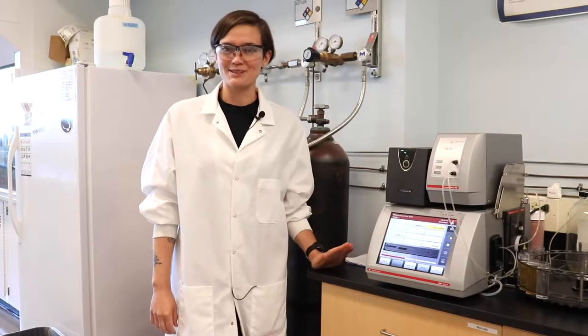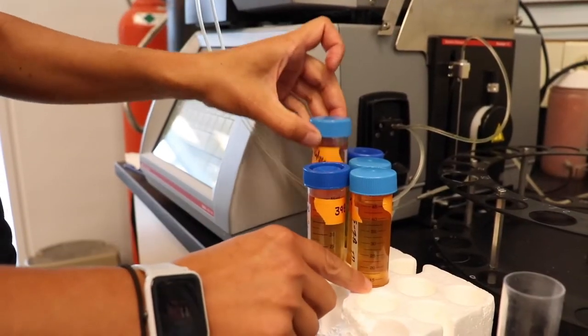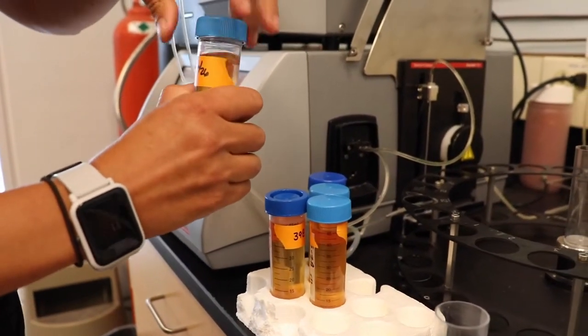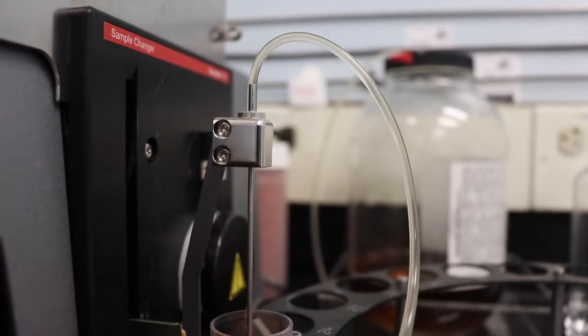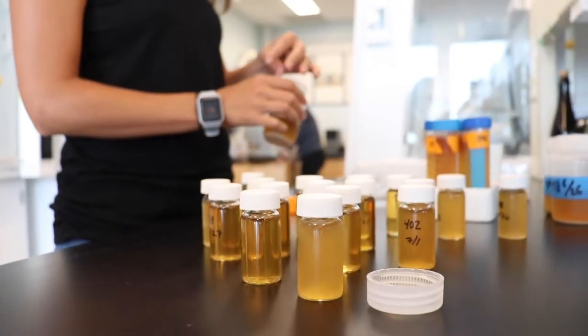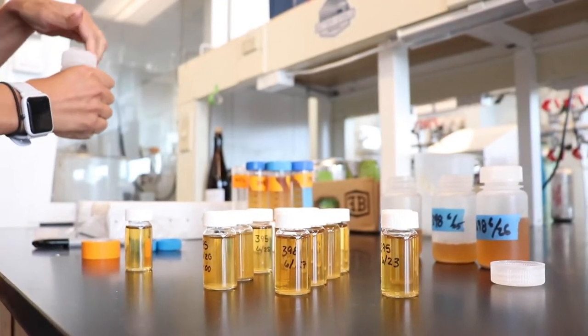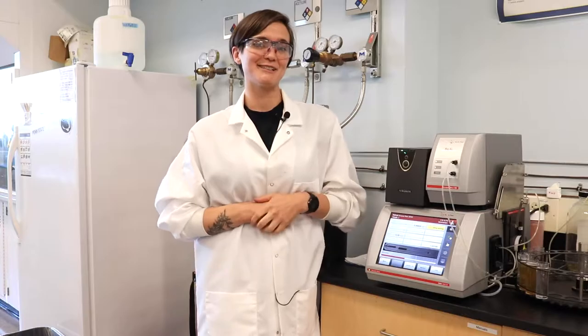One of our most popular testing services is alcohol by volume which is performed by this instrument which we affectionately call Big Al. Big Al is a density meter and a near-infrared spectrometer and we use it to not only test for the alcohol content in your beer but also calories, sugar content, and specific gravity. He's very talented.